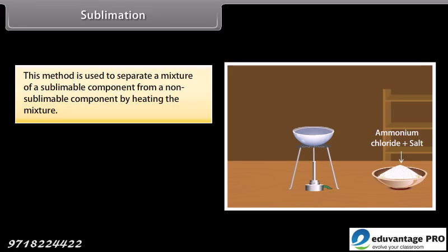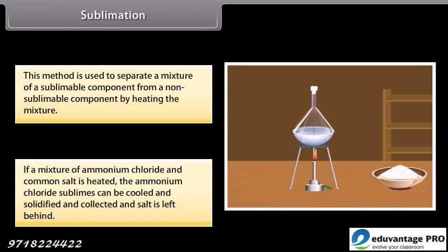Sublimation: This method is used to separate a mixture of sublimable component from a non-sublimable component by heating the mixture. If a mixture of ammonium chloride and common salt is heated, the ammonium chloride sublimes, can be cooled and solidified and collected, and salt is left behind.